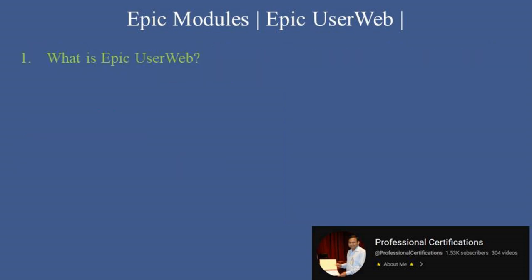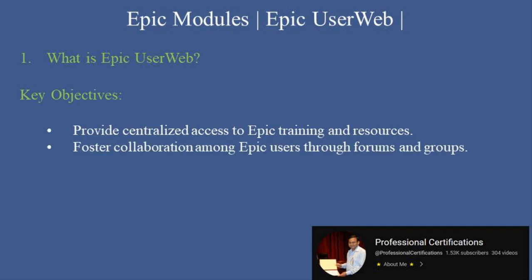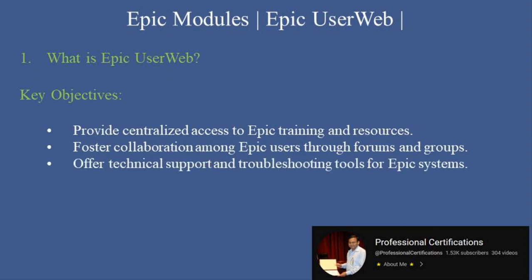What is Epic UserWeb? Epic UserWeb is a comprehensive online portal designed to support organizations using Epic Systems. It offers a wide range of resources, including training materials, documentation, community forums, and technical support. Key objectives include providing centralized access to Epic training and resources, fostering collaboration among Epic users through forums and groups, and offering technical support and troubleshooting tools for Epic Systems.